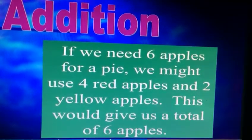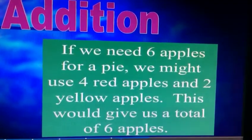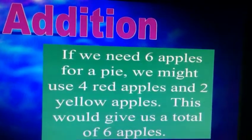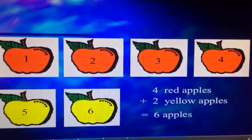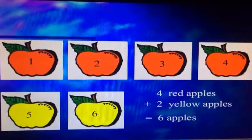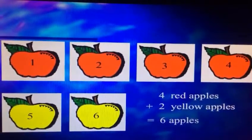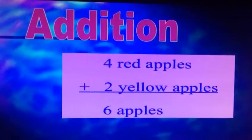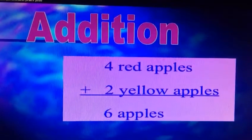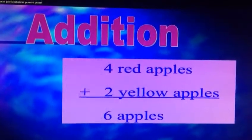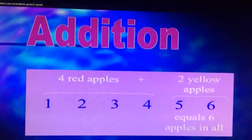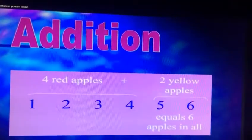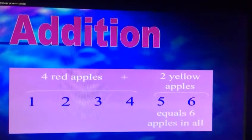we might use 4 red apples and 2 yellow apples. This would give us a total of 6 apples. Let's equate this: 4 red apples plus 2 yellow apples gives us a total of 6 apples — just a different way of adding up, letting us know that there are a total of 6 apples, which we need.